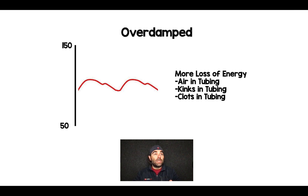Now, there are two things that can happen that can give you false readings on an arterial line. One is called over-damping and the other one is called under-damping. All damping means on an arterial line — think of it as a shock absorber, like shocks on a car when you're going over a bumpy road. There are things that will make the shocks work better and there are things that will make them work worse.